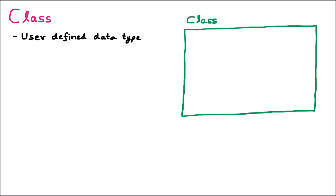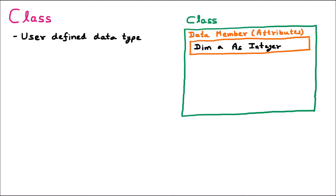The idea behind creating the class was that whenever we are going to declare some variables, just like integer a or float b, those should be declared inside the class. In C we declare a variable like int a, and similarly in .NET we write dim a as integer. So all variable declarations should be inside the class. Whenever we declare a variable inside the class, that is called the data member or the attribute.